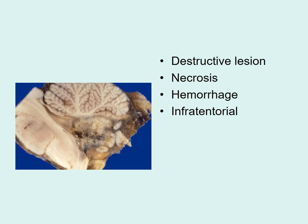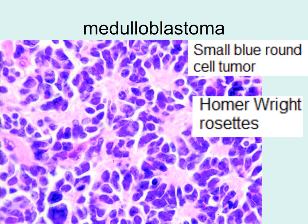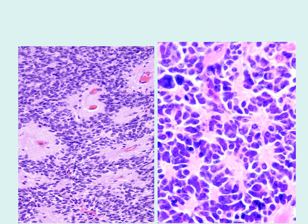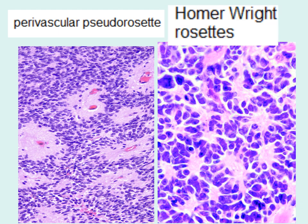Microscopically, medulloblastoma shows rosettes called Homer Wright rosettes, where centrally there is a neuropil light blue area with no blood vessels — it is a small blue round cell tumor. Comparing the two: ependymoma has perivascular pseudorosettes with blood vessels at the center and tumor cells arranged around them, while medulloblastoma has Homer Wright rosettes around light pink neuropil material. Perivascular pseudorosettes are characteristic of ependymoma; Homer Wright rosettes are characteristic of medulloblastoma.